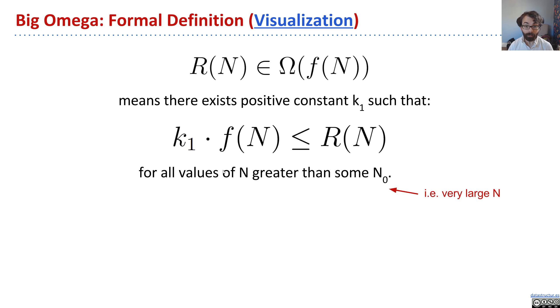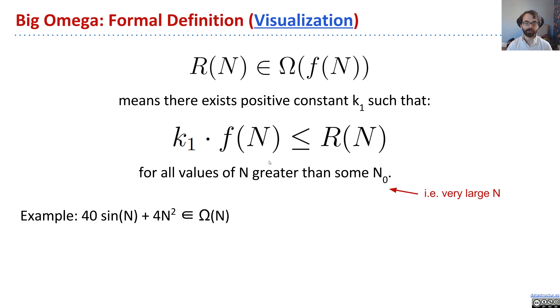Formally, we'd say that r of n is big omega f of n if you can take that function r of n and say that it's always greater than a scaled version of that function for sufficiently large n.